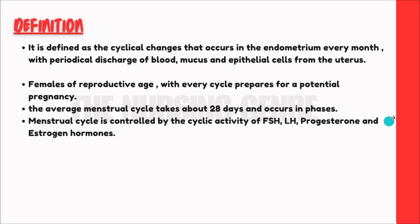First of all, the definition of the Menstrual Cycle. It is defined as the cyclical changes that occur in the endometrium every month, with the periodical discharge of blood, mucus, and epithelial cells from the uterus. The Menstrual Cycle means that women, every month, have a cyclical change in the uterus.